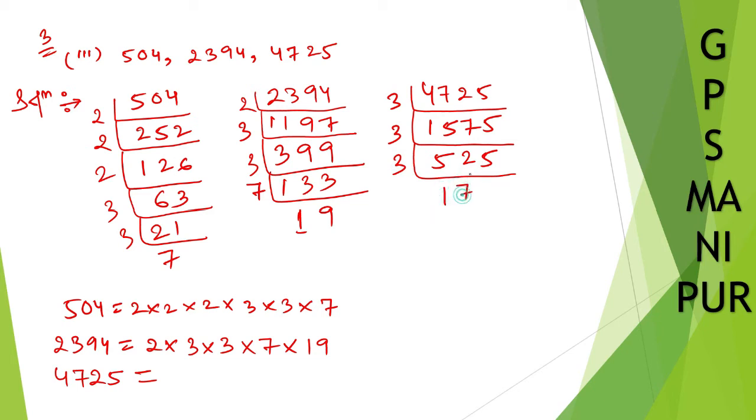Let us divide by 5. 5 into 175 gives 35. Let us divide by 5 again. 5 into 35 gives 7. So I can write down, this number is 3 into 3 into 3 into 5 into 5 into 7.